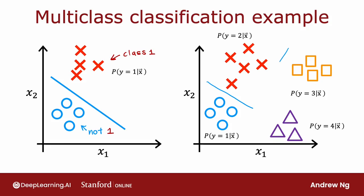And it turns out that the algorithm you learn about in the next video can learn a decision boundary that maybe looks like this, that divides the space x1 and x2 into four categories rather than just two categories.